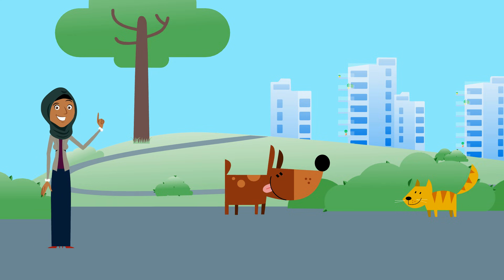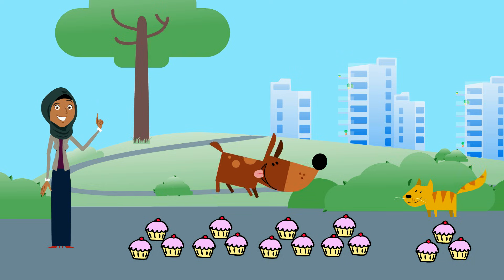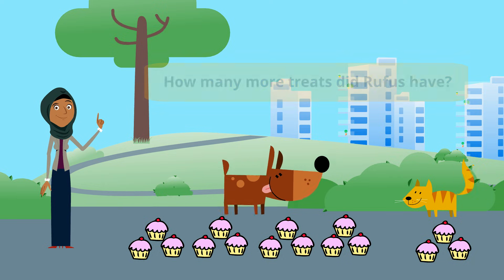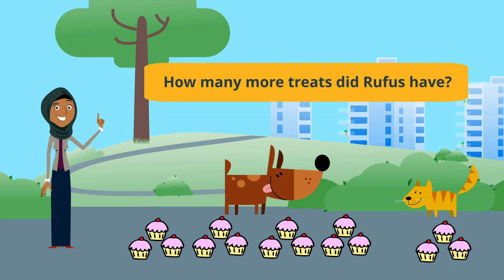Last week, Ginger only got three treats and Rufus got 12. Bad dog, Rufus. I'm wondering, after stealing, how many more treats did Rufus have? Let's take a look.